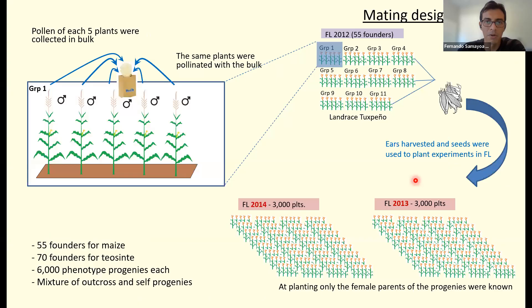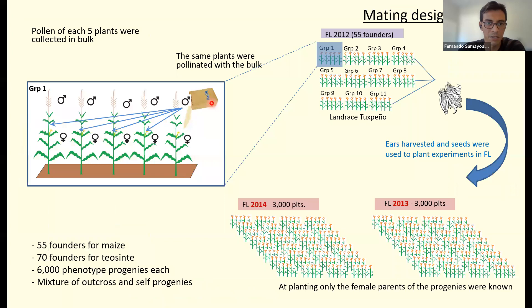Now I will describe the mating design used in maize. We sampled 55 founders for Tuxpeño and made 11 groups of five plants. Within each group we collected the pollen in bulk and pollinated the same five plants, generating self progeny and outcross progeny. Those seeds were harvested and planted in subsequent years — in 2013 we planted three tons of plants, and in 2014 another three tons, for a total of six tons of plants for the whole experiment. We only knew the female parent; we did not know the male parent, which I will address later. We also took tissue samples from each parent and progeny for genotyping.